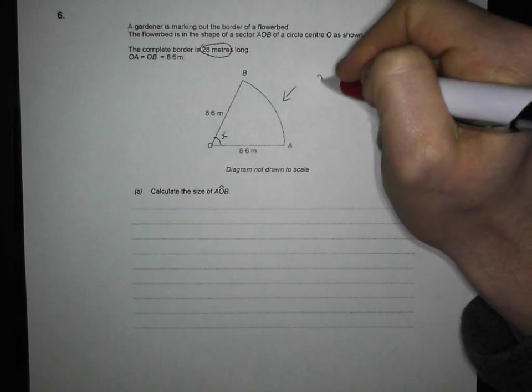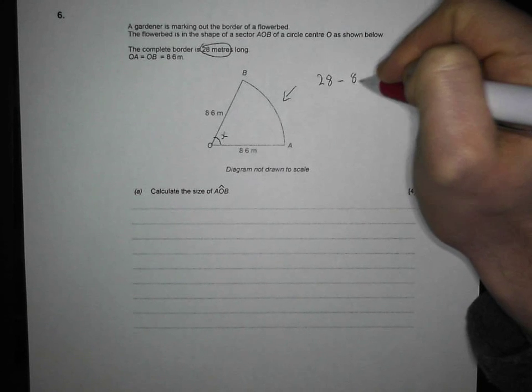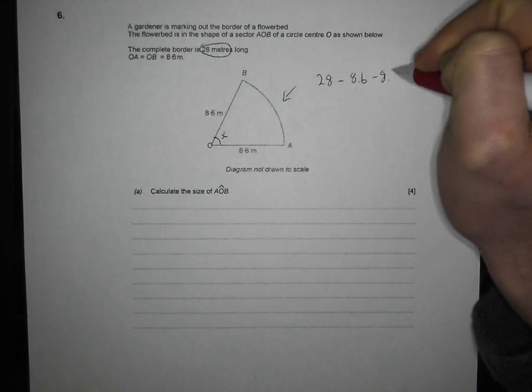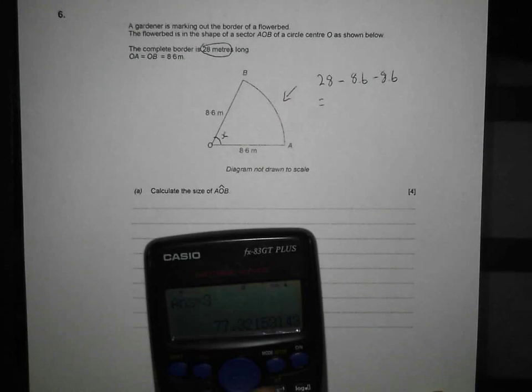So, we're going to get 28 metres, we're going to take off our 8.6 and take off another 8.6. And that's going to give us that bit. So let's get that sorted first.